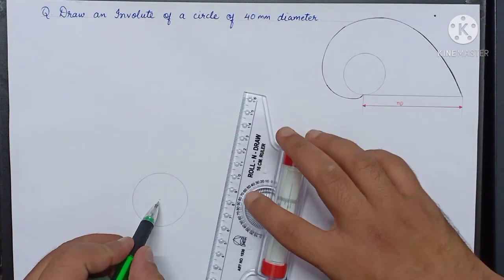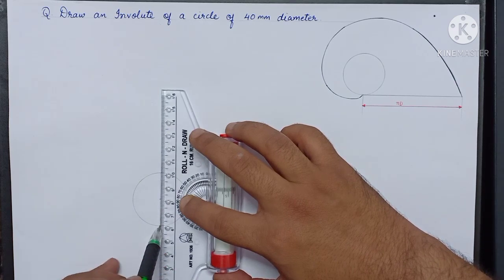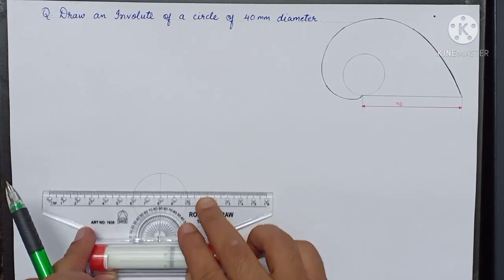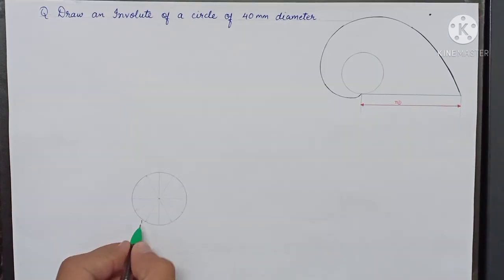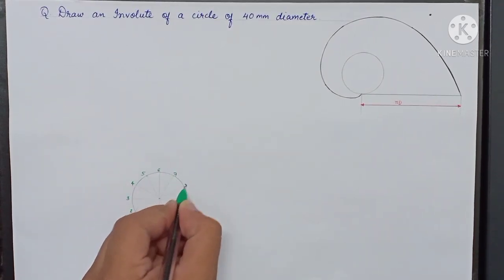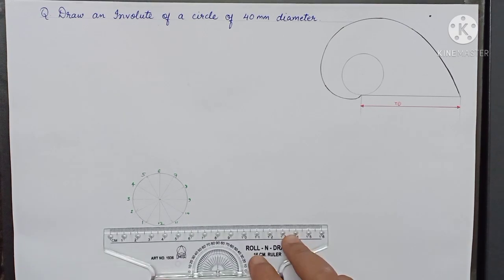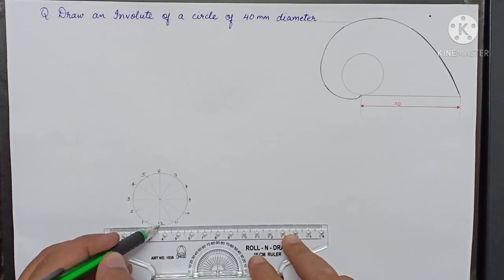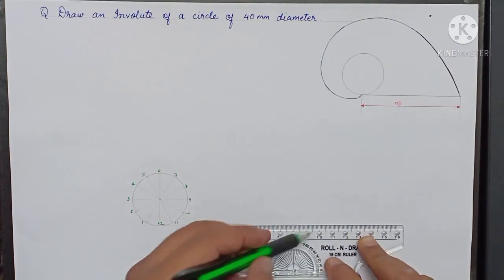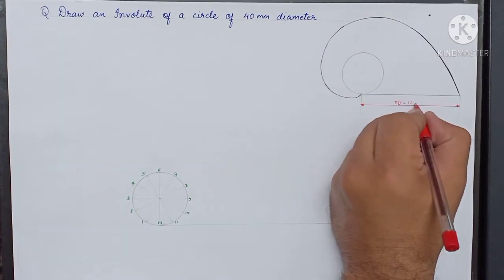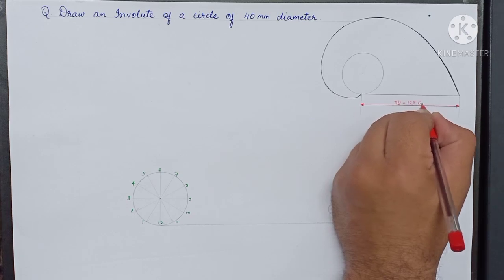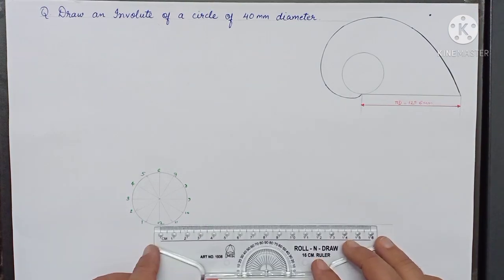Divide the circle into 12 equal parts. Now draw a tangent from point 12. On this line we will mark a distance of the circumference, that is πd. Here πd will be 125.6 millimeter, so we measure 125.6 millimeter on this line.